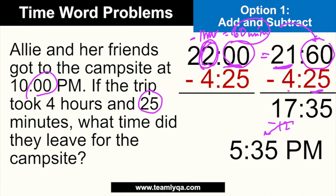So again, what are the two skills you need to subtract time? Number one: be comfortable with converting to military time when needed. Number two: be comfortable with the fact that sometimes you need to borrow one hour and add it as 60 minutes to the minutes column so you can subtract.